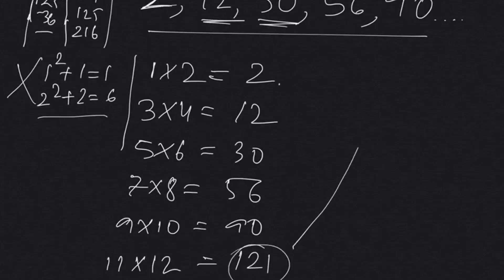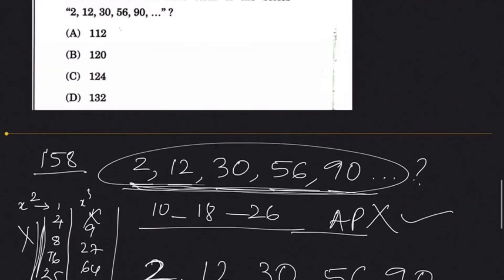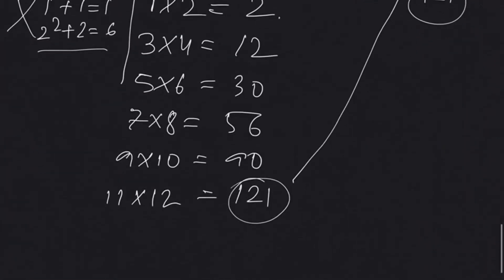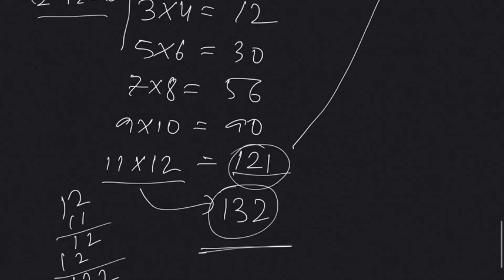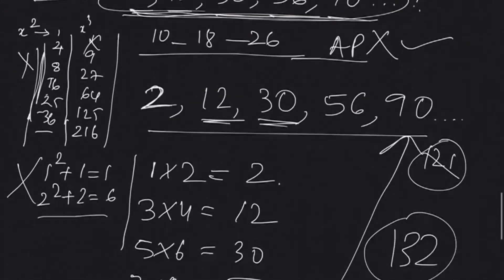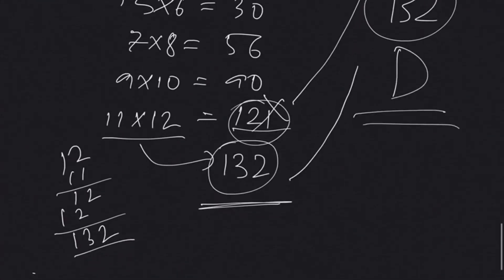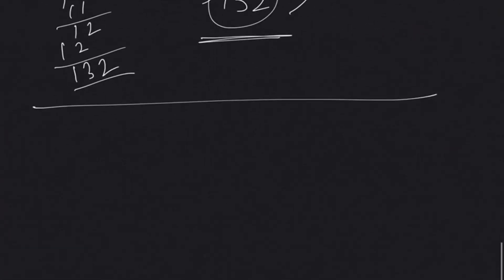11 times 12 equals 132. So the answer is 132 — not 121. The answer is option D, 132. Let's continue with another question.